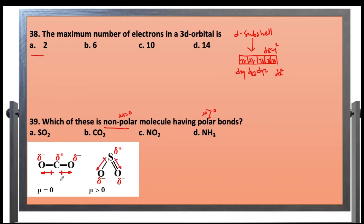In carbon dioxide, the dipole moment acts in one direction on one side and in the opposite direction on the other side. This dipole moment is exactly nullified — the resultant mu value is zero. So this is a non-polar molecule. Now let's compare with the bent structure, which contains lone pairs of electrons.